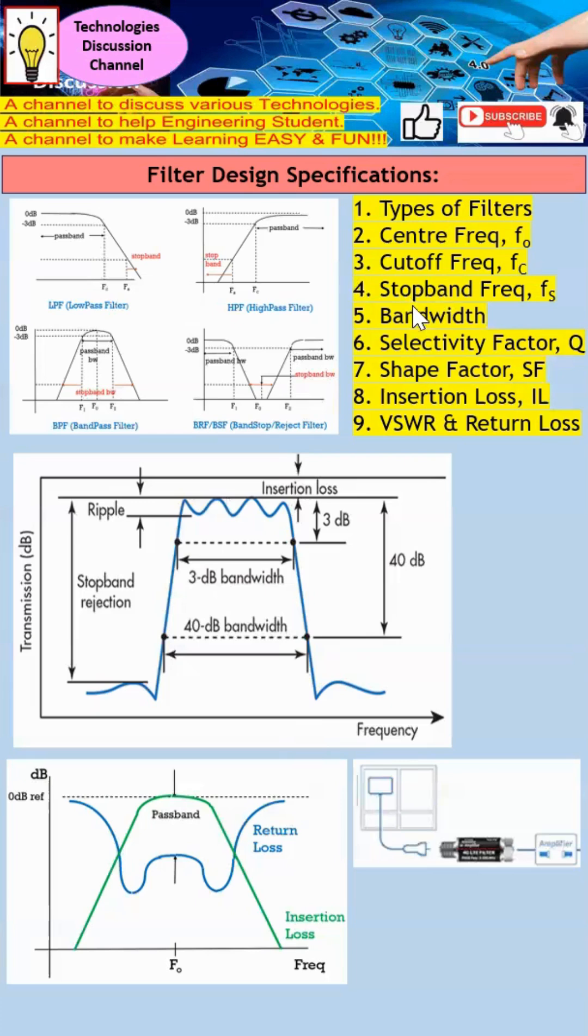Next will be the bandwidth. Earlier on, I mentioned that the maximum point reduced by 3 dB on the right and the maximum point reduced to 3 dB on the left. I take the upper cutoff frequency minus the lower cutoff frequency. This will give me the bandwidth of the band pass filter.